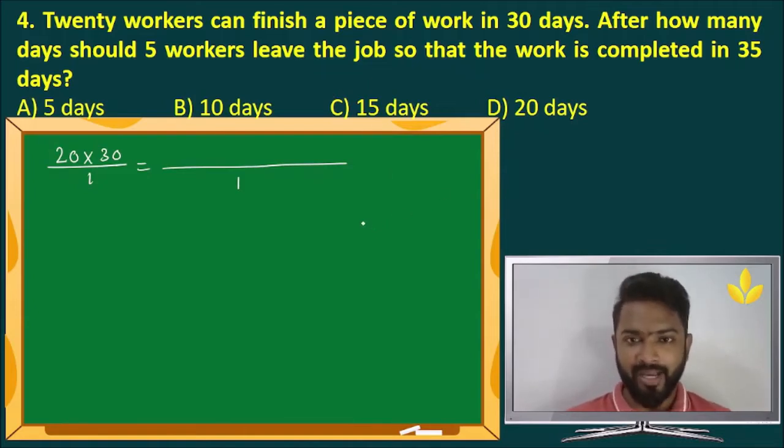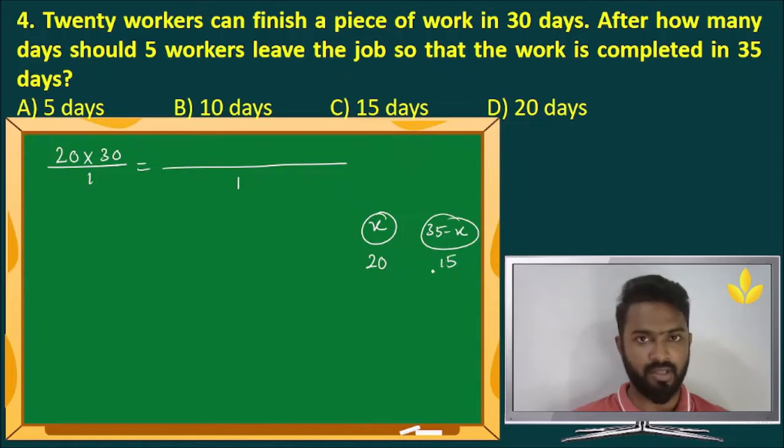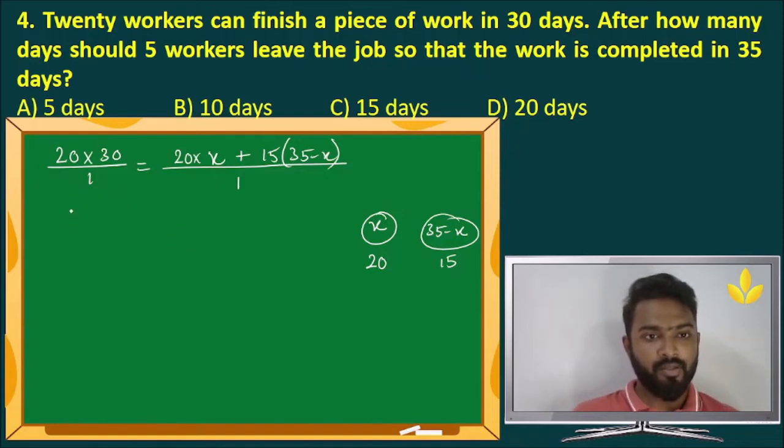Now suppose the work is being done in 2 time segments, one is x and one is 35 minus x. So in the first x days, all the 20 workers are working. Now after these x days, 5 workers leave. So the remaining 35 minus x days only 15 workers are working. So M2, the first part of M2 is 20 and we have x days plus 15 into 35 minus x days. Now let us solve it. So we have 20 into 30 equals 20x plus 15 into 35 minus x. Let us cancel a few things.